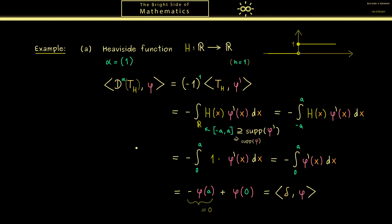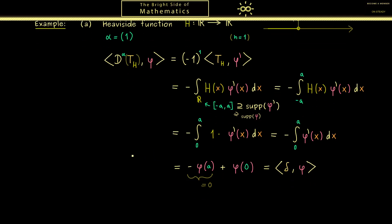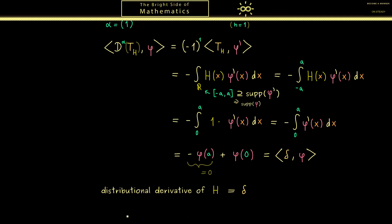So we conclude: the distributional derivative of the Heaviside function is the delta distribution. Everything is well-defined and makes mathematical sense. We don't have a classical derivative, but we do have a distributional one.